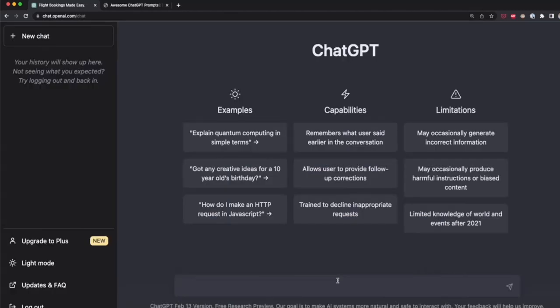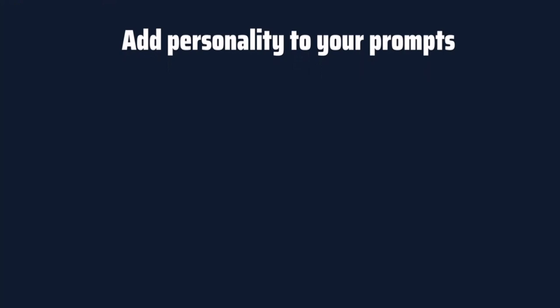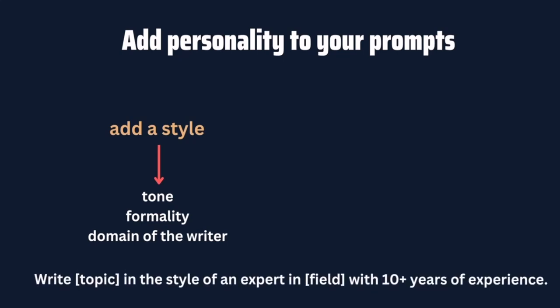The next two approaches are useful for generating text for emails, blogs, stories, and articles. The first is adding personality to your prompts — adding style and descriptors. Adding style gives your text a specific tone, formality, and domain. For example: 'write a topic in the style of an expert in field X with 10 years of experience.' A descriptor is an adjective you add to tweak your prompt.